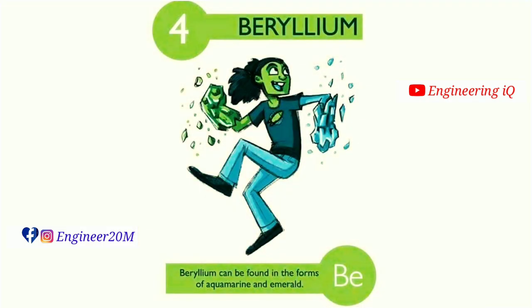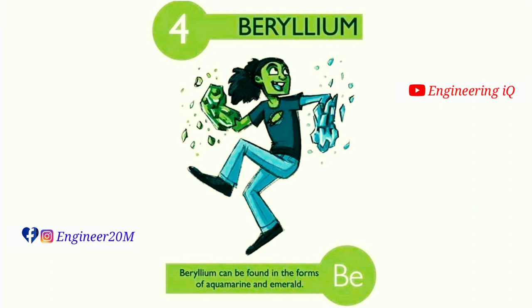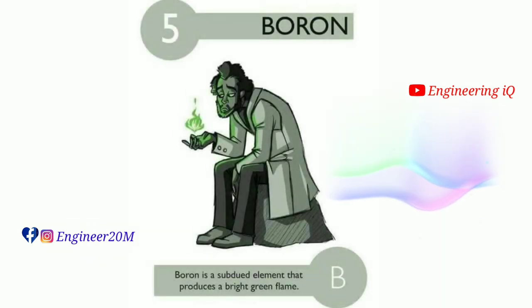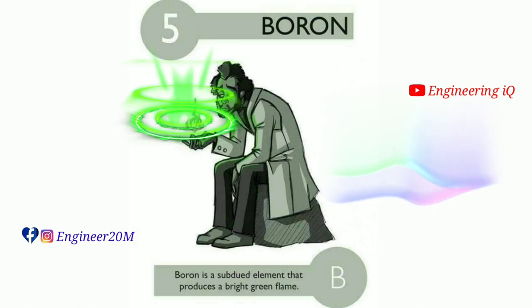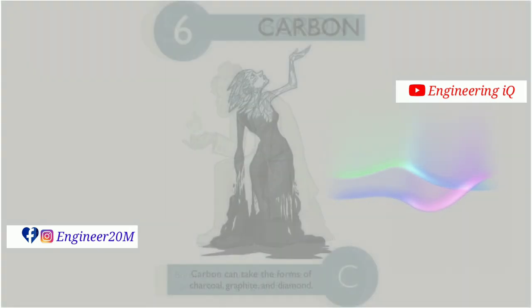Beryllium can be found in the form of aquamarine and emerald. It is denoted by Be. Boron: atomic number of boron is 5. Boron is a subdued element that produces a bright green flame. It is denoted by B.